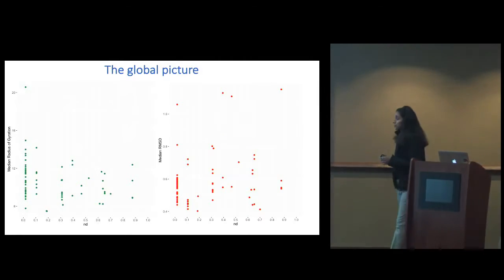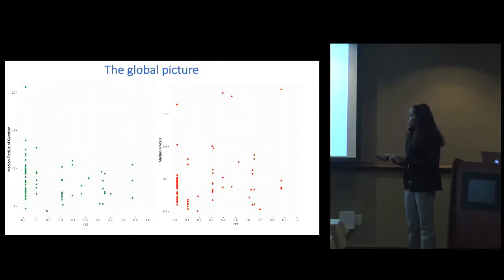Here's the global picture. We plotted the median radius of gyration along the evolutionary timeline. ND is reflective of age: zero means ancestral and 1.0 means more modern. I won't go into the details of how we construct these timelines, but I'd be glad to explain after the presentation. We plotted them along these timelines and also the median RMSD. We wanted to see if there was a trend of increase or decrease like we'd observed for folding speeds in previous studies. However, we don't see a clear-cut trend.